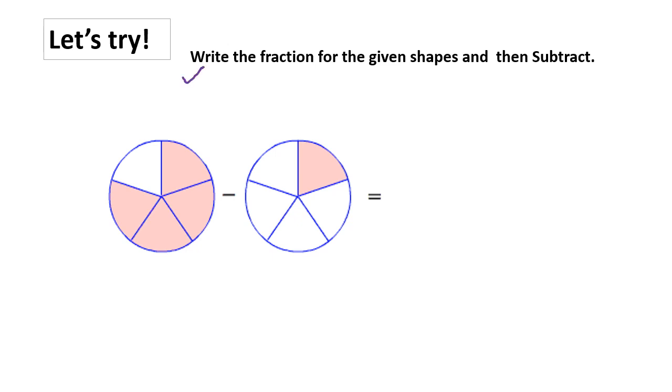Let's try this one. Write the fraction for the given shapes and then subtract. For the first shape we have 4/5 and for the second shape we have 1/5. We can see that the denominators are same. We are going to subtract the numerators and we will get 3/5. The denominator will be the same.